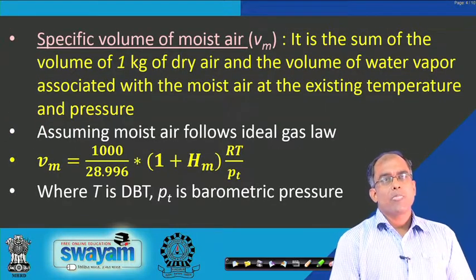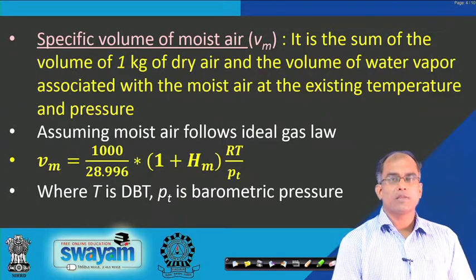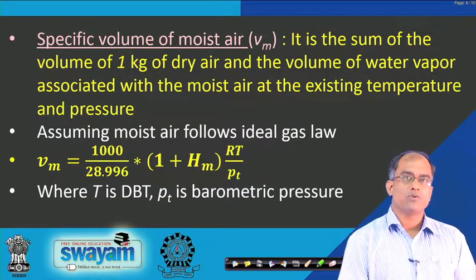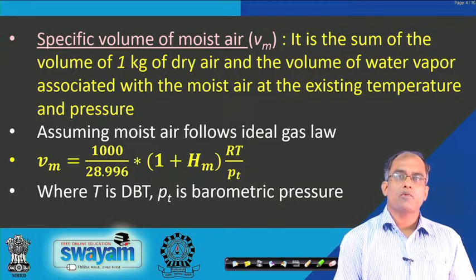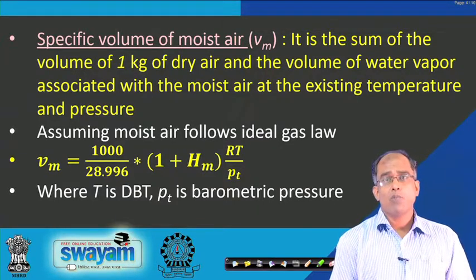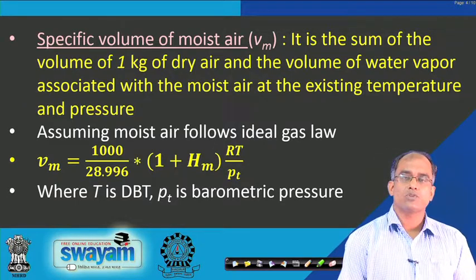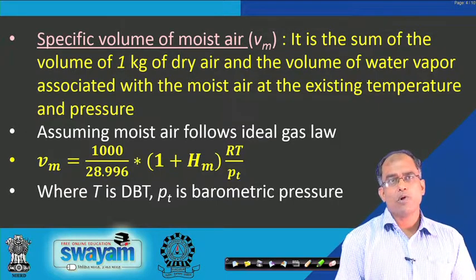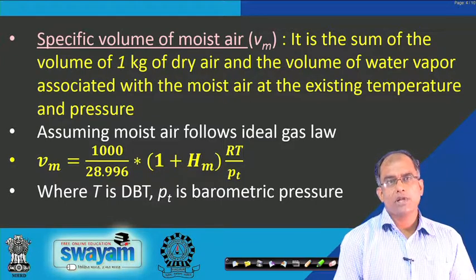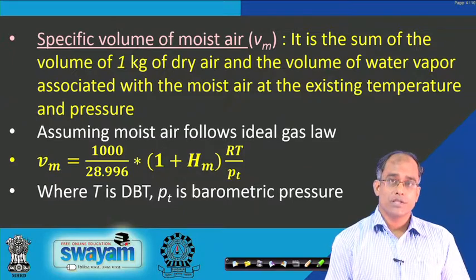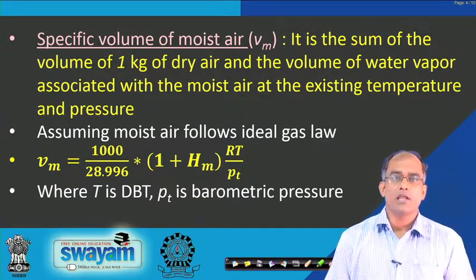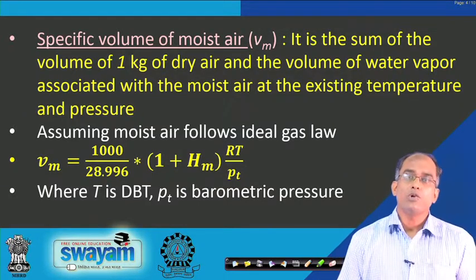There are several important properties of humid air (the mixture of dry air and water vapour). Specific volume is the sum of the volume of 1 kg of dry air and the volume of the associated water vapour at the existing temperature and pressure. Using the ideal gas law (PV = nRT), where 1 kg of dry air = 1000/28.996 g-moles, and the moles of moisture = (1000/28.996) × H_m, the specific volume V_m = (1 + H_m) × RT / (28.996 × P_T).